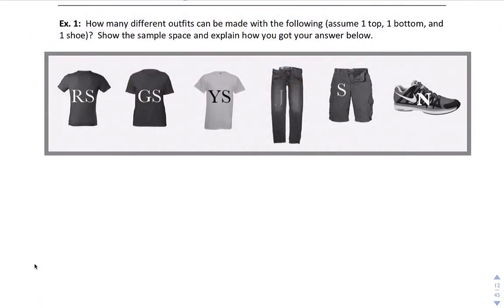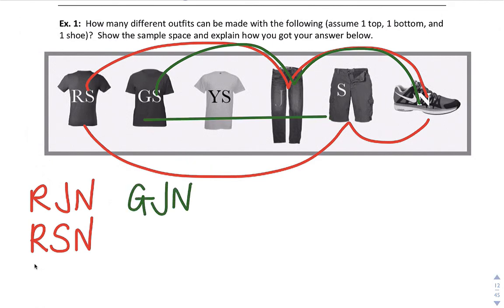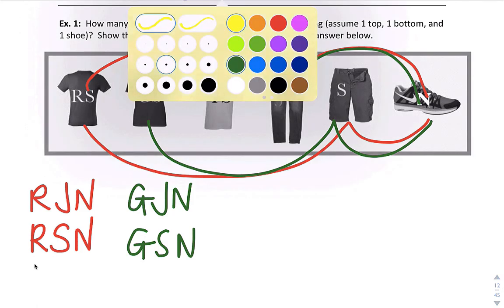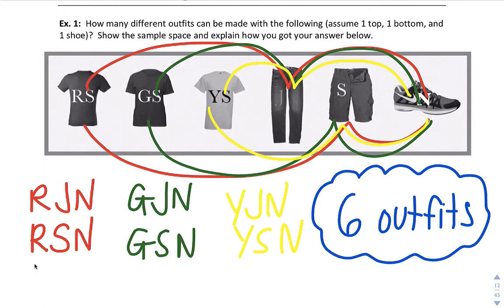For this one, we have a red shirt, RS. You can wear jeans and you can wear your shoes, your Nike. So your red shirt, your jeans, and your Nike. We could also do your red shirt, your shorts, and your Nike shoes. GS, green shirt. So we could do green shirt, jeans, Nike. We could do green shirt, shorts, and Nike.